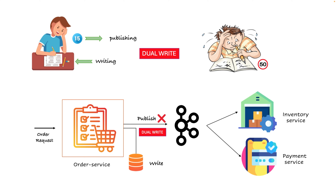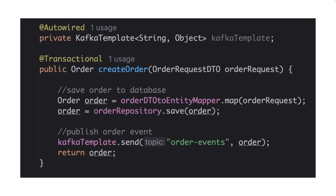Think practically: what if the Kafka broker became temporarily unavailable during the transaction? Then the order will never be processed. Or what if while writing to the database there is a failure, but the message was already published indicating the order was created when in reality it was not? This is a clear picture of data inconsistency. If you look at the code snippet, we first write the order object to the DB, then immediately publish through Kafka. Since this runs in a single transaction, if persisting the record to the DB goes wrong, it's difficult to roll back because the message was already published to Kafka.